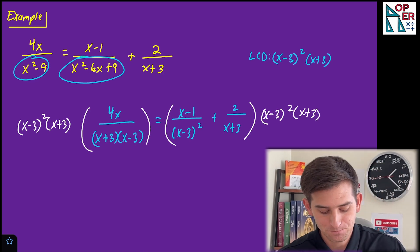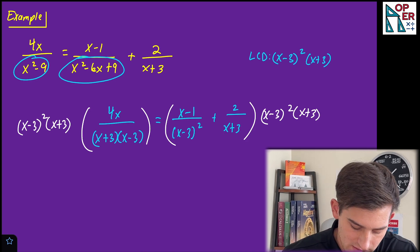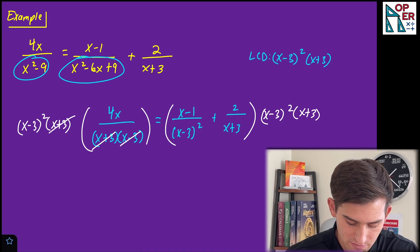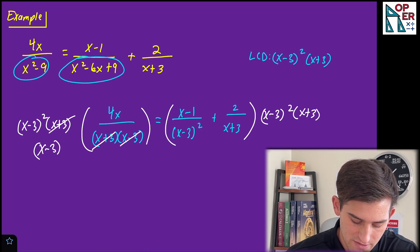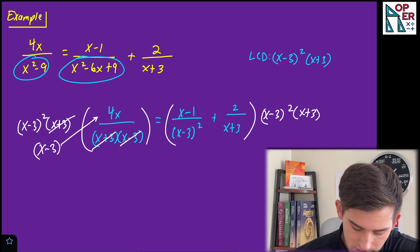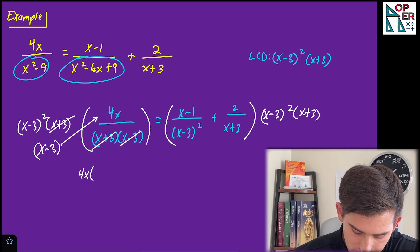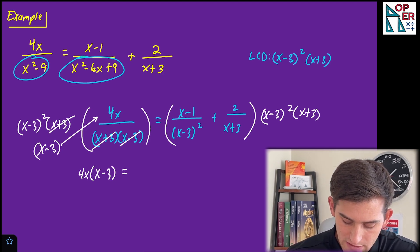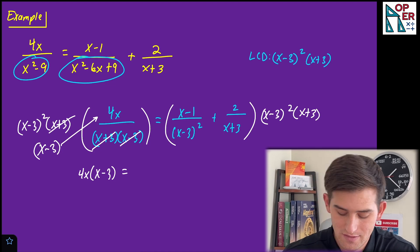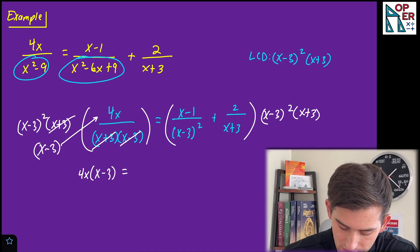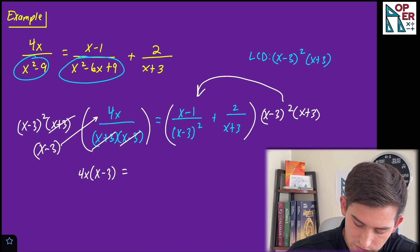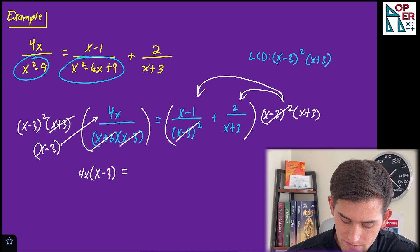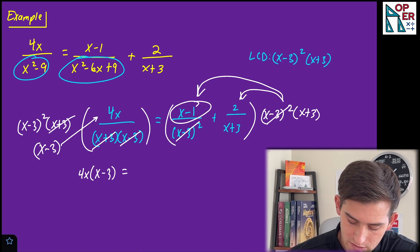And now we'll multiply. So starting over here on the left, notice that this X plus three will cancel with this X plus three, and one of the X minus threes will cancel. So we still have a factor of X minus three here that we need to multiply to four X. So let's write four X times X minus three, and we'll simplify that here in just a minute. Now on the right side, we have two separate rational expressions combined as a sum. And so let's focus on this first one first, and then we'll do the second one later. So notice here, we're gonna cancel out both of our factors of X minus three. So we're gonna be left with X minus one times X plus three.